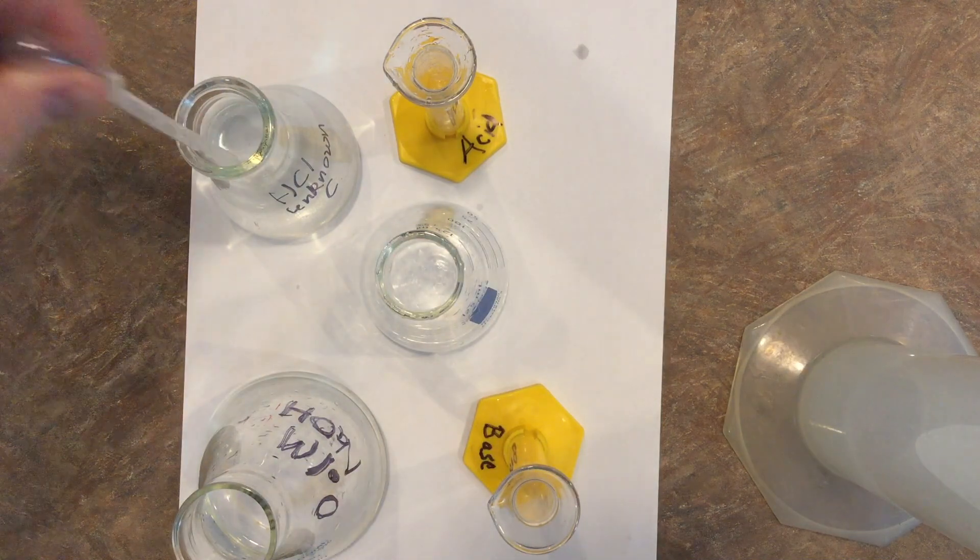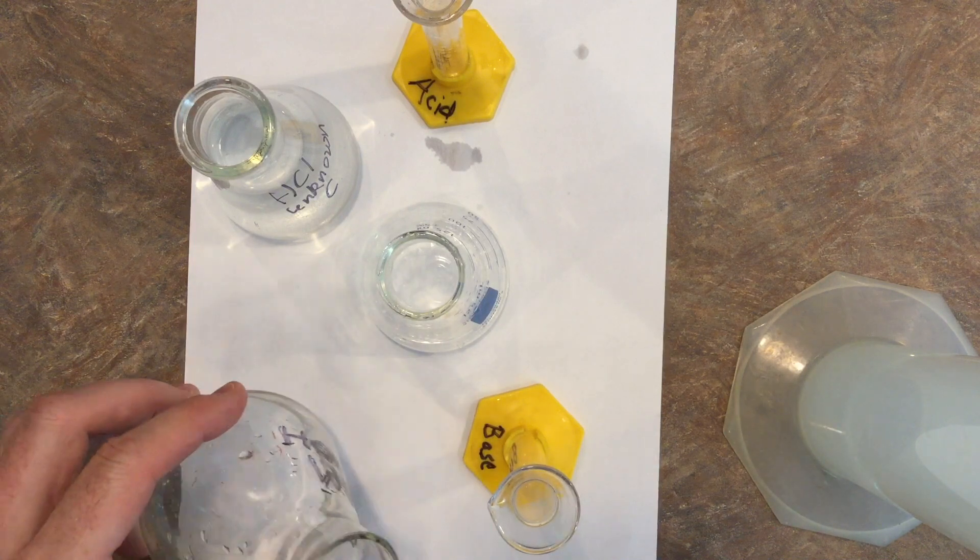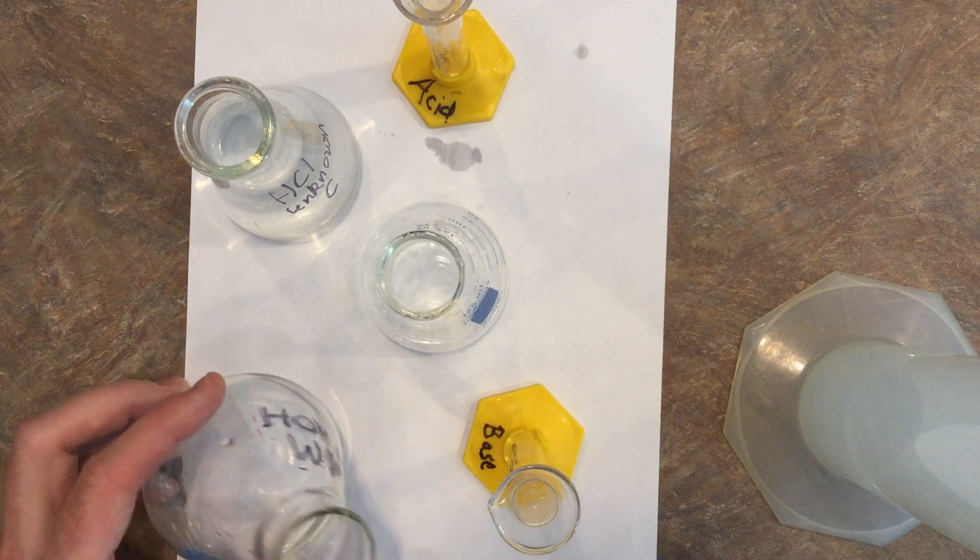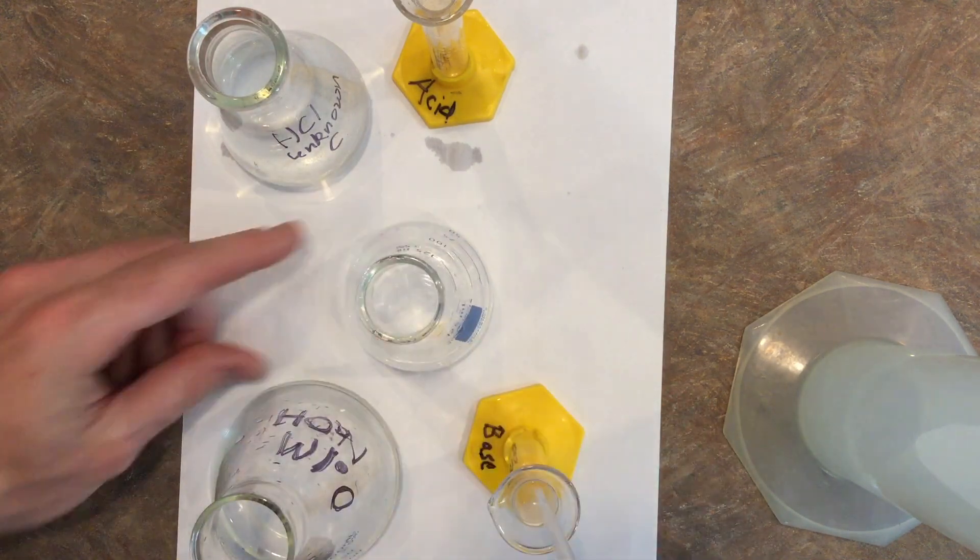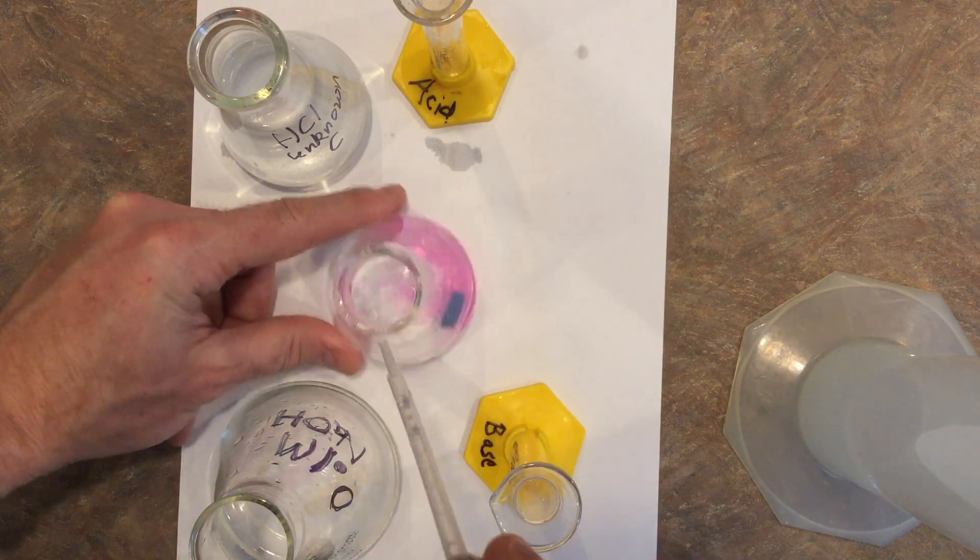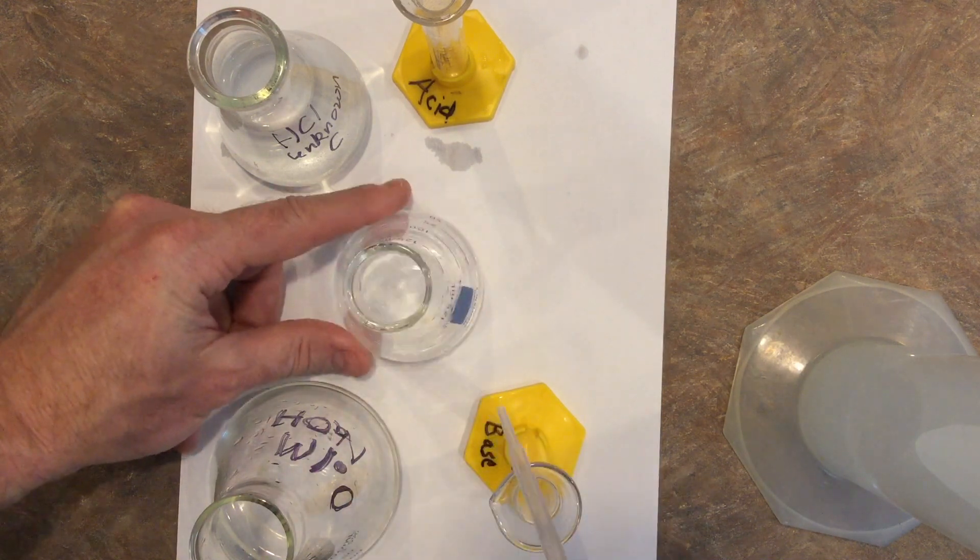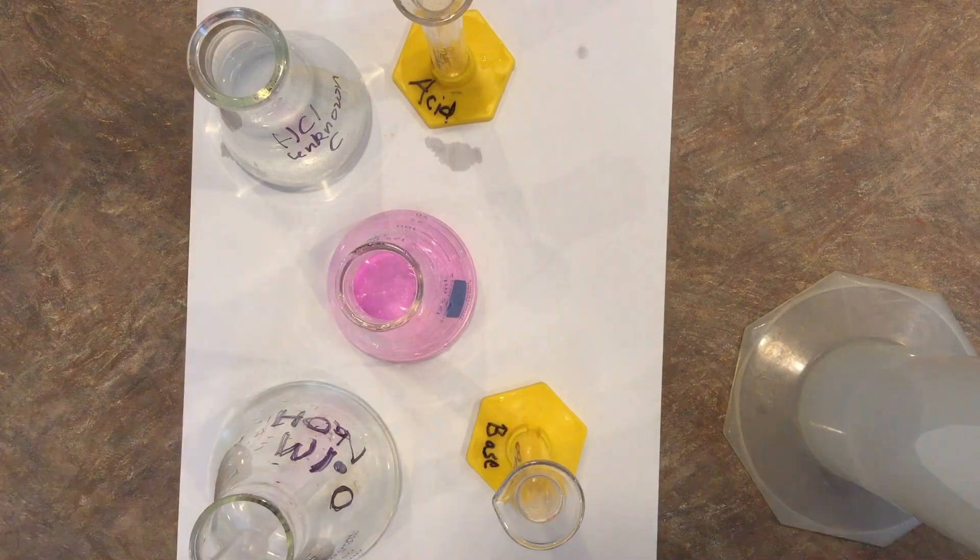And finally we'll go on to unknown C. We'll get 10 milliliters of that into the Erlenmeyer flask. Then we'll get 10 milliliters of our sodium hydroxide and slowly start adding it over.